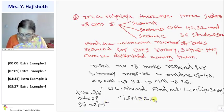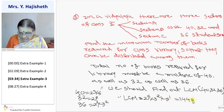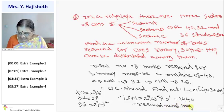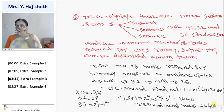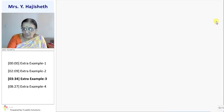LCM is product of all the factors with highest power. So 2 ka highest power 5, 3 ka highest power 2 and 5 ka 1. So my answer is 1440. Therefore, required number of books in library are 1440. Itne books minimum chahiye. Then and then it can be distributed among all.